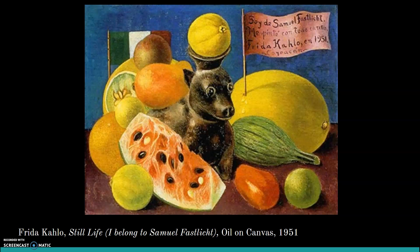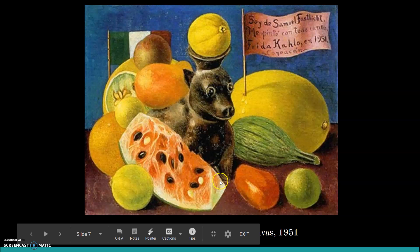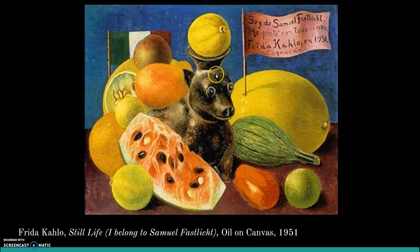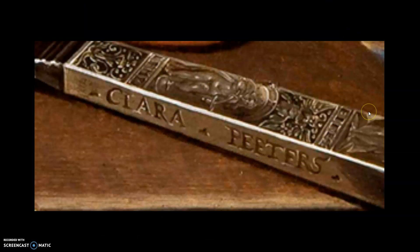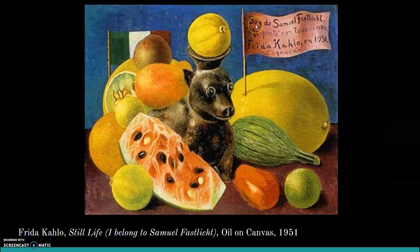You can see all these local, vibrant fruits — she used a lot of bright colors. There's a dog statue there too; I think she just liked it, as she was a big animal lover. You can see the Mexican flag in the background showing her pride for her heritage. She signed and titled the piece within the painting, just like Clara Peeters did with her knife. The title translates to: 'I belong to Samuel — painted with great affection by Frida Kahlo, 1951, Coyoacán,' which is actually where Frida Kahlo was born and died in Mexico.